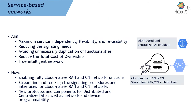The second area is service-based networks. The idea is that services should be independent from each other, reusable, and flexible. One goal is to reduce signaling needs and avoid unnecessary duplication of functionalities, thereby reducing system complexity and total cost of ownership. Ultimately, when you have this swarm of independent services, you can use AI to achieve a truly intelligent network in terms of management and operation.